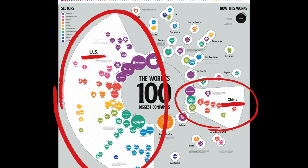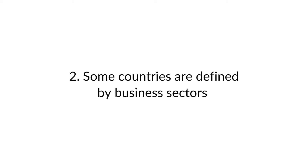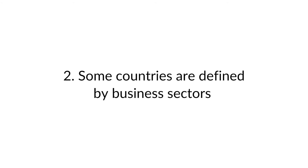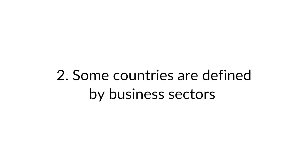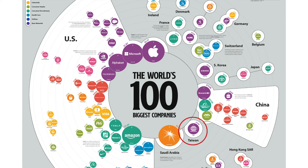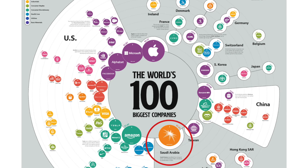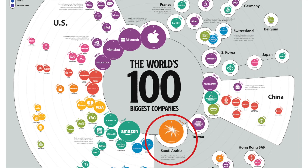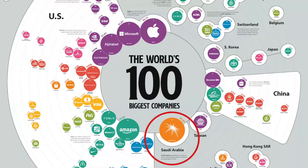The second point is that certain countries are defined by certain sectors. Have a look at France with L'Oréal and LVMH, South Korea defined by Samsung, Taiwan defined by TSMC — their semiconductor company — and also Saudi Arabia, home to the biggest oil company in the world.